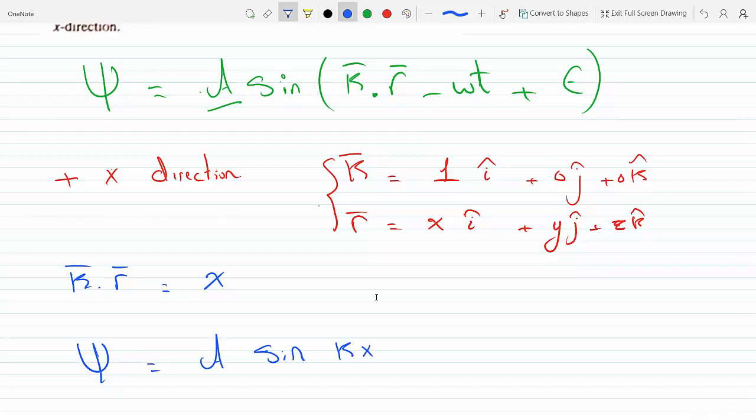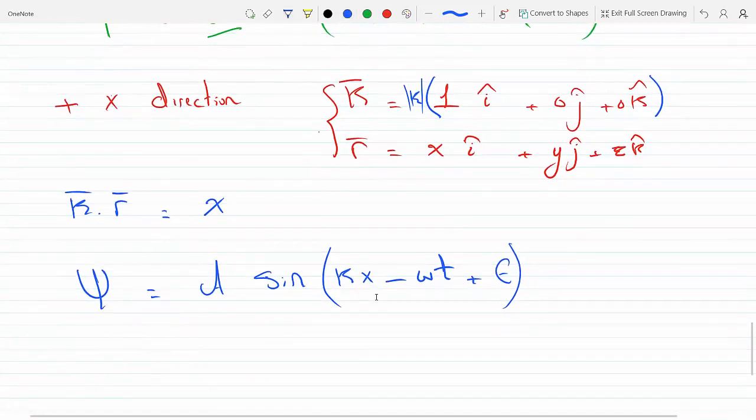So basically I'm supposed to multiply this by the wave number k, whatever the magnitude of k is. K is x minus omega, because it doesn't have to be one, it could be anything, minus omega t plus the shift, plus the phase shift.